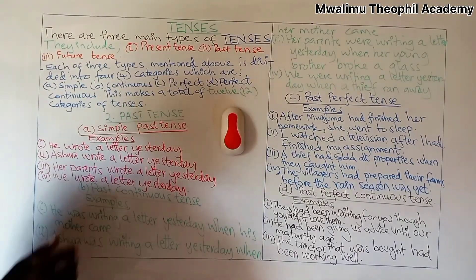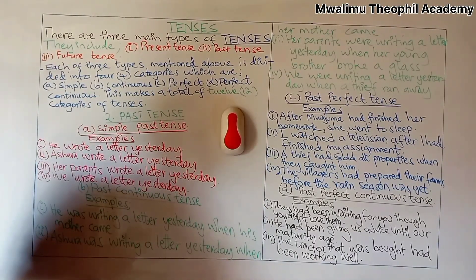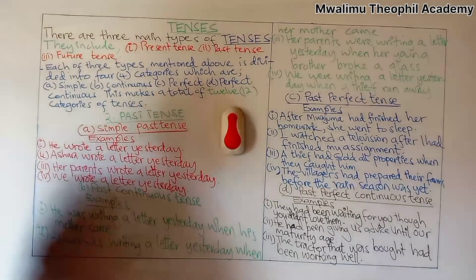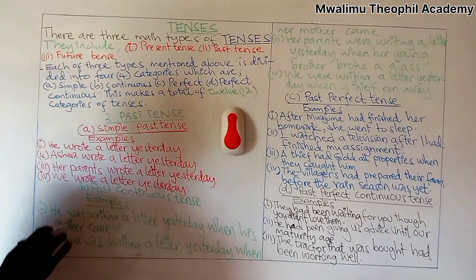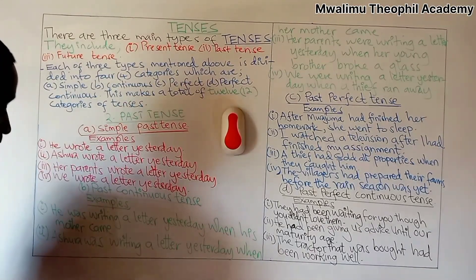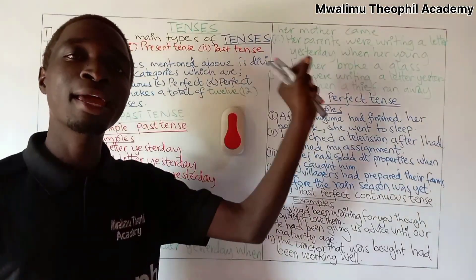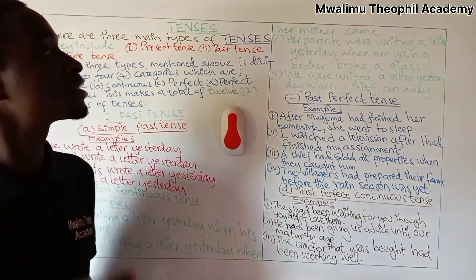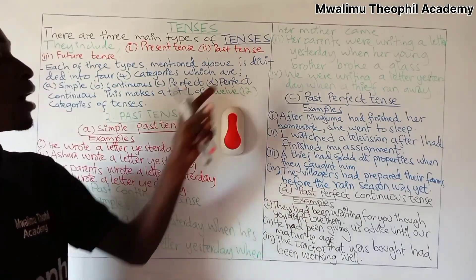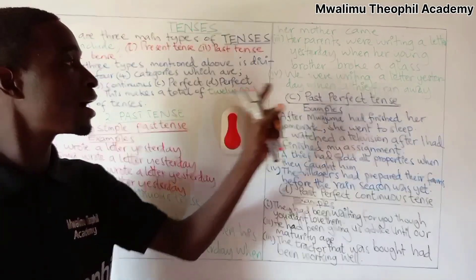After seeing examples of simple past tense, let us shift to our second category: past continuous tense. Our first example: he was writing a letter yesterday when his mother came. A second example: Ashura was writing a letter yesterday when her mother came. Our third example: her parents were writing a letter yesterday when her young brother broke a glass. Our fourth example: we were writing a letter yesterday when Aviv ran away.